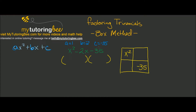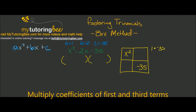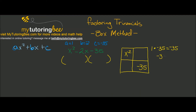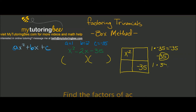The next step is to multiply my a and c terms together. In this case, it's 1 times negative 35, which gives me negative 35. Our next step is to take that negative 35 and find its factors — the numbers you multiply to get negative 35. Focusing on 35, one factor pair is 1 times 35, and another is 5 times 7.